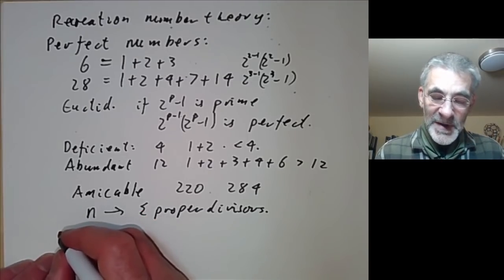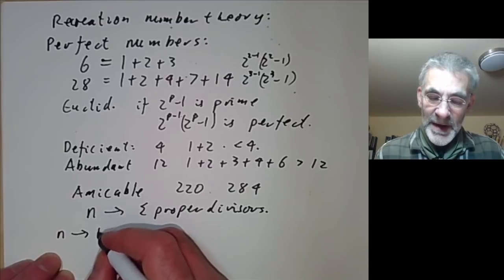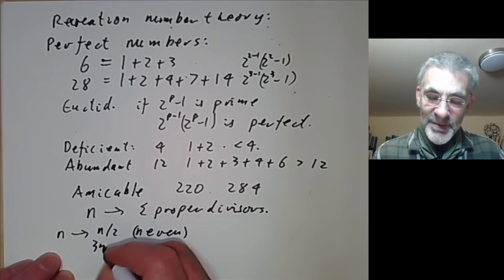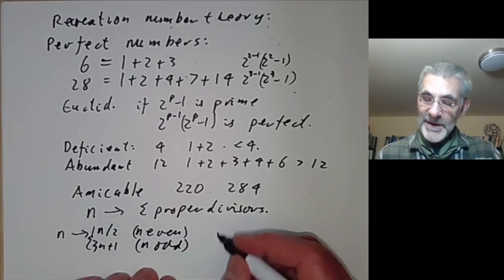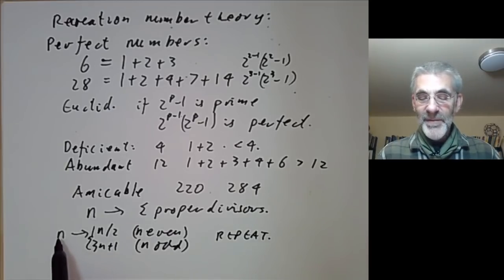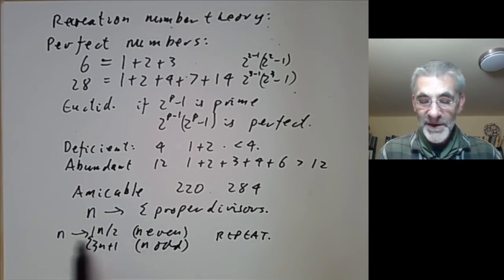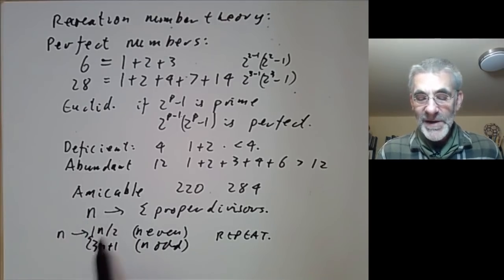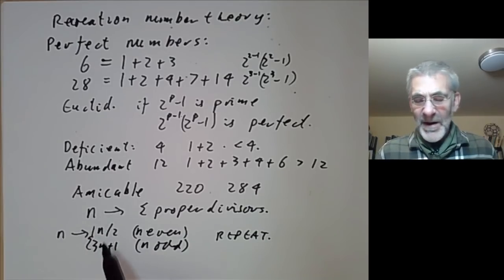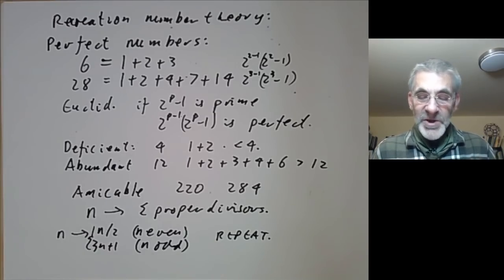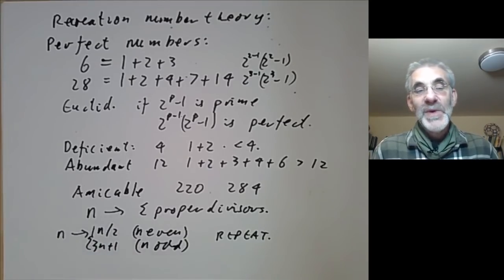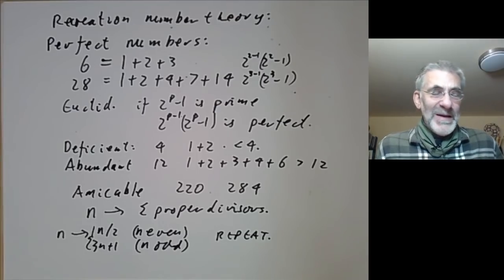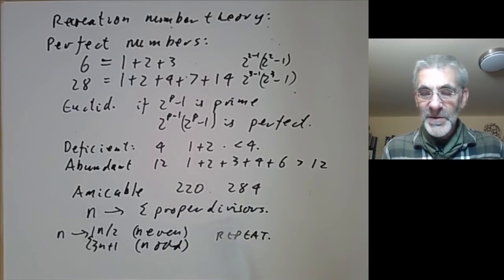Another example is the 3n plus 1 problem: take a number n, map it to n over 2 if n is even, and 3n plus 1 if n is odd, and repeat. The question is whether you always eventually reach 1. In general, you can't tell what happens with discrete dynamical systems because any Turing machine can be encoded as one, and there is no general way to tell what a Turing machine does.